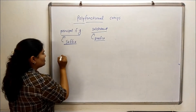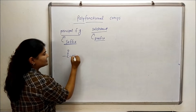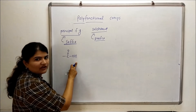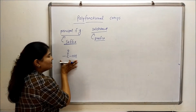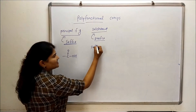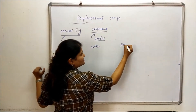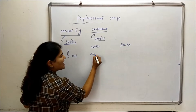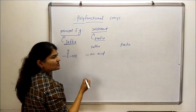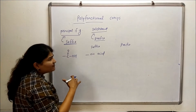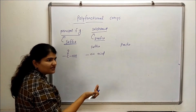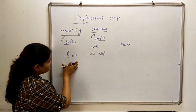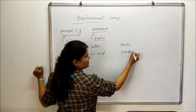Let's start from the first functional group: carboxylic acid. Carboxylic acid is the highest priority functional group in the priority order for polyfunctional compounds. For this we use the suffix -oic acid. If in any case we have to give it a prefix — which is not the case because it is the highest priority group — then it would be carboxy.